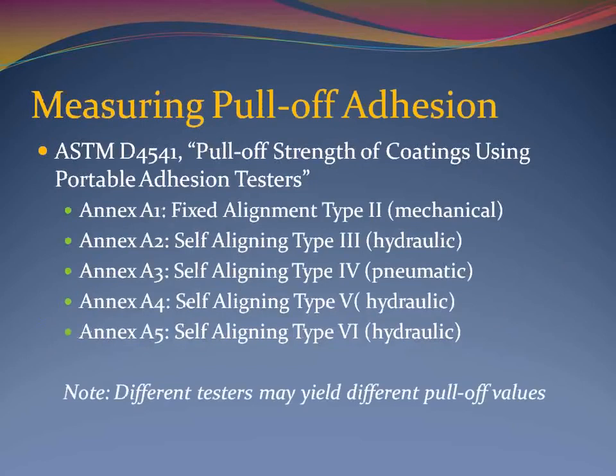ASTM D4541 describes the procedures associated with evaluating tensile or pull-off adhesion of coatings applied to metal substrates. There are five annexes in the standard describing the apparatus and procedures for one fixed alignment tester and four self-aligning test devices, including three hydraulic and one pneumatic tester. The standard also provides the results of an interlaboratory study performed in 2008 that demonstrates the variability in test data generated by different test devices. It is important to determine which devices were used to perform testing prior to comparing pull-off adhesion values.